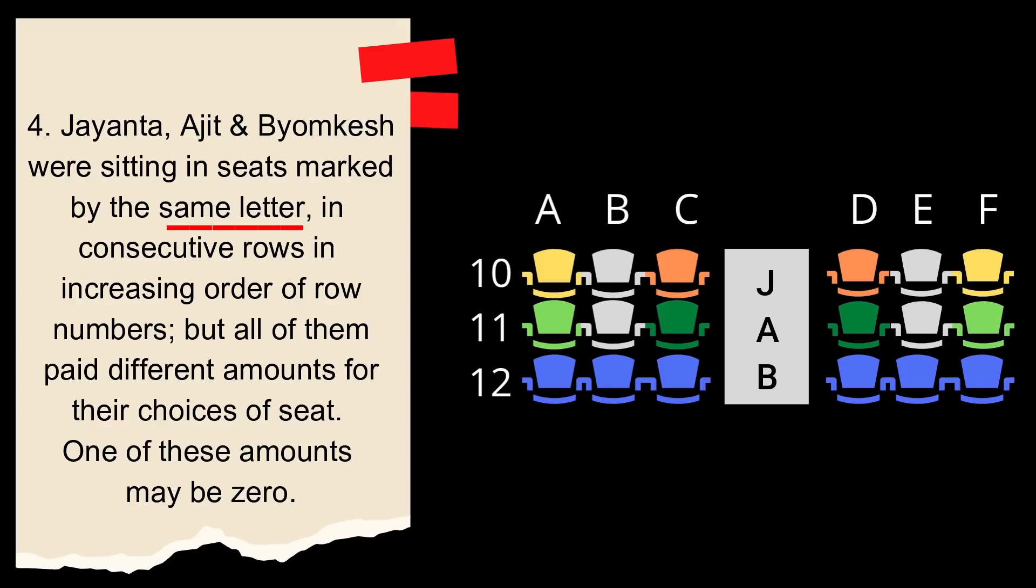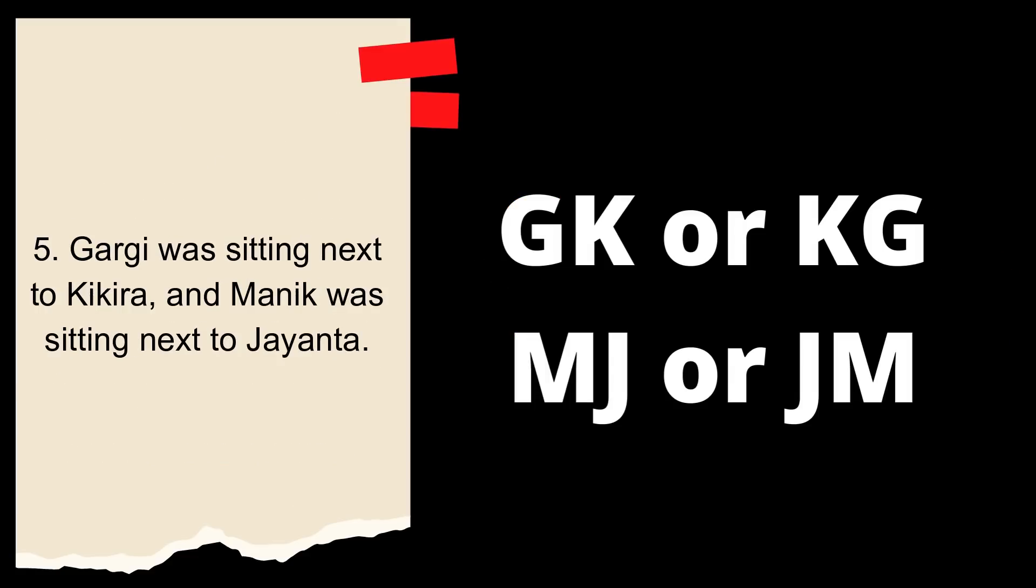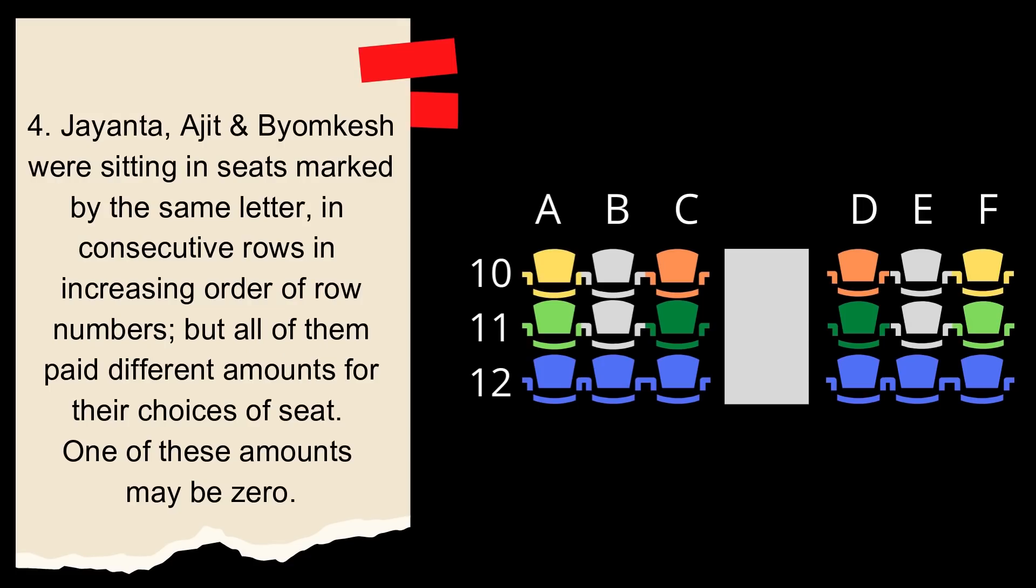In the same constraint it says that J, A, B are sitting at seats with the same letter, which means they are either at the window seats or at the aisle seats. Why not the middle seats? Because they paid different amounts. So, if they are sitting either in the window seats or in the aisle seat, the next constraint that comes into picture is something which gets related to this constraint.